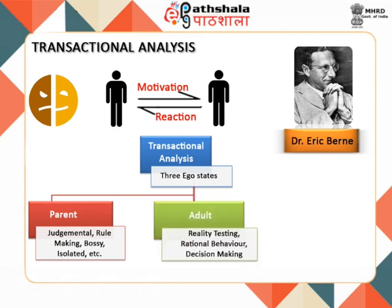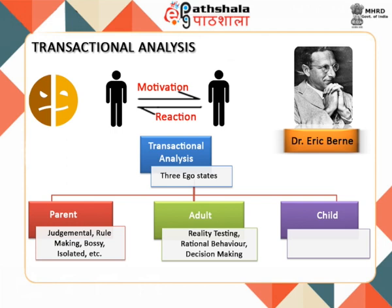The Adult ego state is a collection of reality testing, rational behavior, and decision making. The person in this ego state verifies and updates the reactions received from the other two states. The Child ego state is a collection of recordings in the brain of the individual of behaviors, attitudes, and impulses which come naturally from our own understanding as a child. The features of this state are that it is spontaneous, intense, unconfident, relevant, and anxious.